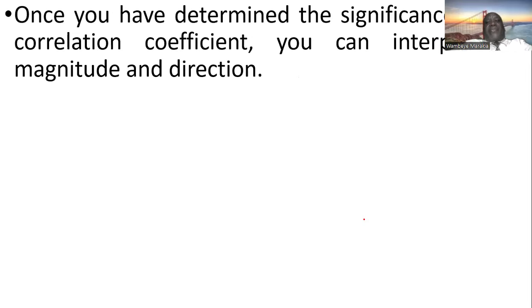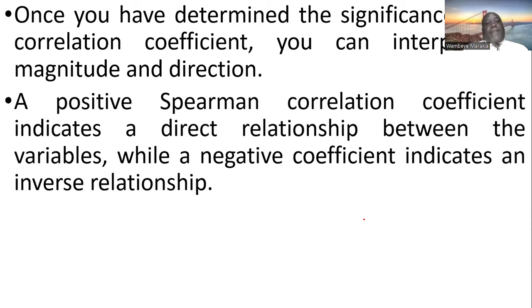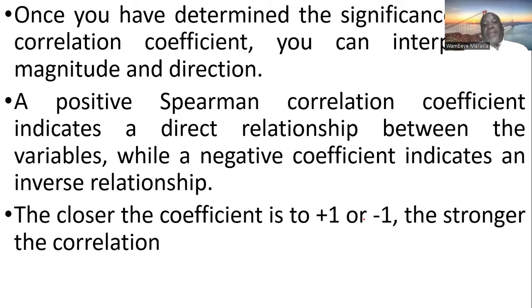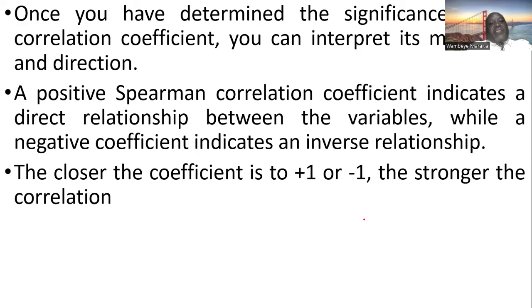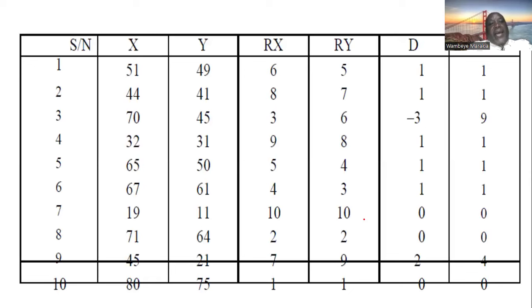Once you have determined the significance of the correlation, you can interpret the magnitude and direction. The magnitude can be strongly negative or strongly positive. A positive coefficient indicates a direct relationship between the two variables, while a negative coefficient indicates an inverse relationship. The closer the coefficient is to positive one or negative one, the stronger the correlation.